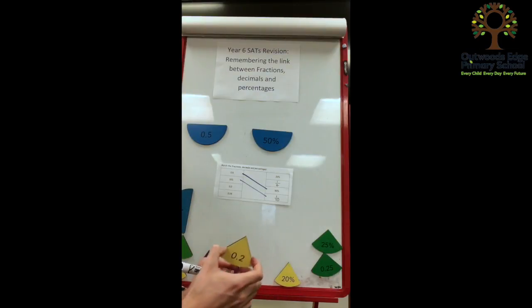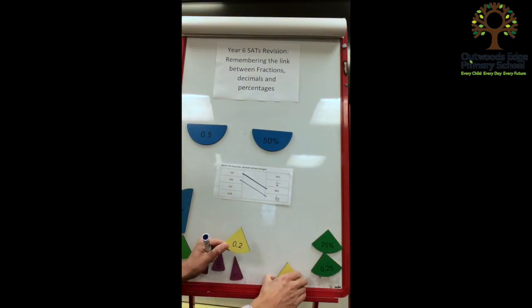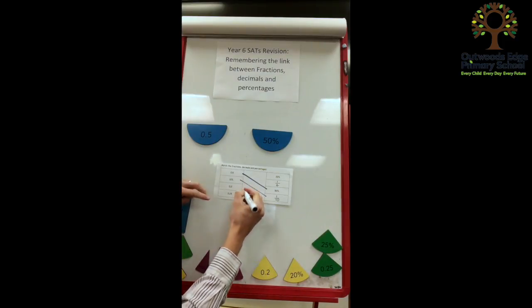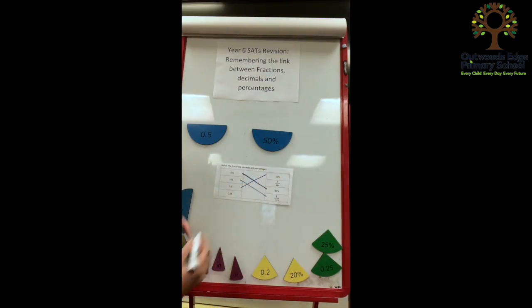0.2, this is the one that they might find hard to memorise, to remember, but 0.2 is the same as 20%. And this is easy using physical apparatus, but this is something they're going to need to remember and memorise, ready for the test.